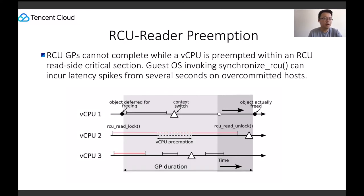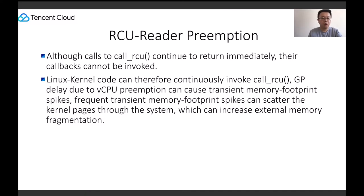An RCU grace period in a guest cannot complete while a vCPU is preempted within an RCU reader-side critical section. Thus, calls to synchronize_rcu() cannot return. Although calls to call_rcu() continue to return immediately, their callbacks cannot be invoked. Kernel code can therefore continuously invoke call_rcu(), resulting in an unbounded quantity of memory that cannot be reused until the grace period completes.